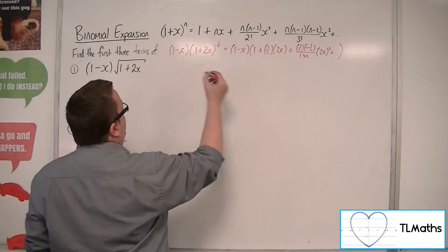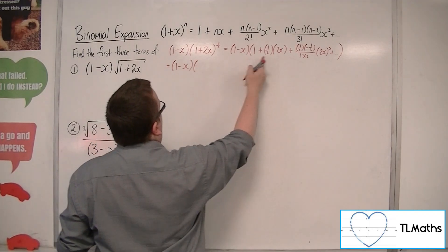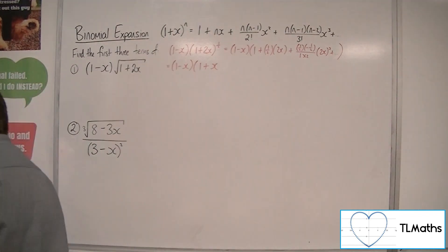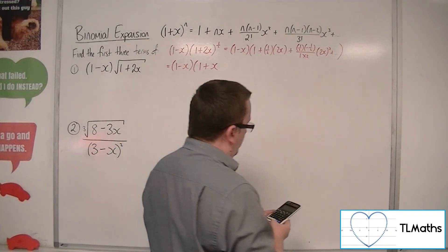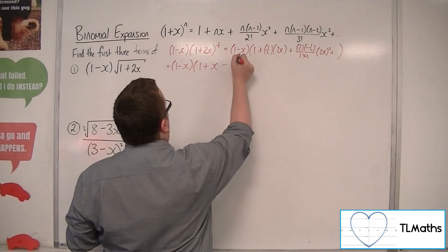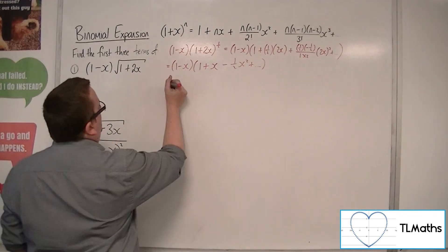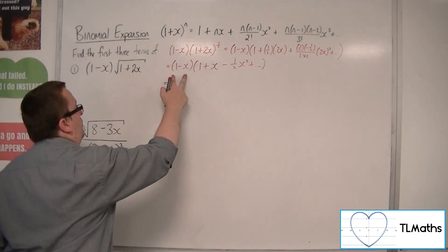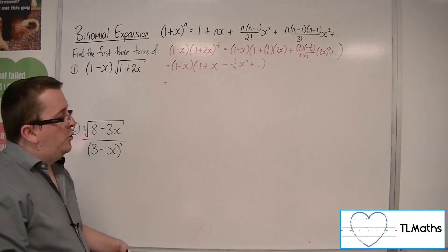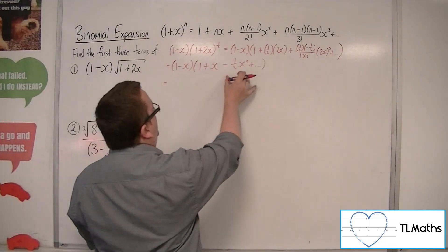Now I want to tidy this up. We've got (1 minus x), and then 1 plus x. The coefficient from one-half times minus one-half is minus one-quarter; dividing by 2 and multiplying by 4 gives minus one-half x squared, plus other terms. Both terms in the first bracket must multiply with all terms in the second bracket, but since there are infinitely many terms, we only multiply out the ones we need.